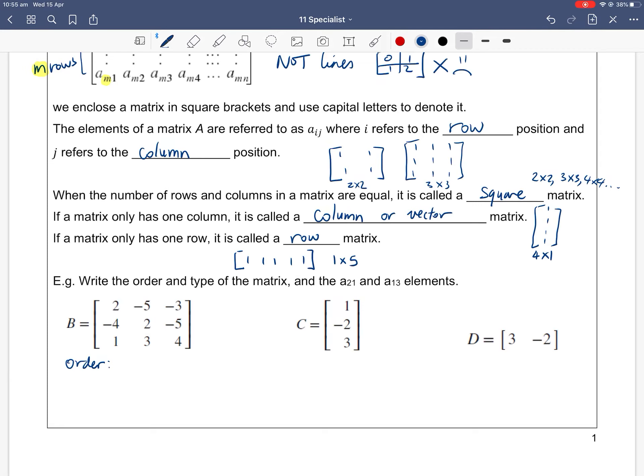What is the order? What is the dimension of this? How many rows does it have? One, two, three. So it's a 3 rows by 3 columns matrix. What kind of matrix is it? It's a 3 by 3, so the number of rows and columns are the same. It's called a square matrix. What is the element A21? Because we called this matrix capital B, I'm going to refer to its element as B21. 2 is the second row, 1 is column 1. So that's minus 4. B21 equals minus 4. And we want B13. So 1 is row 1, 3 is column 3. That's negative 3. B13 is negative 3.